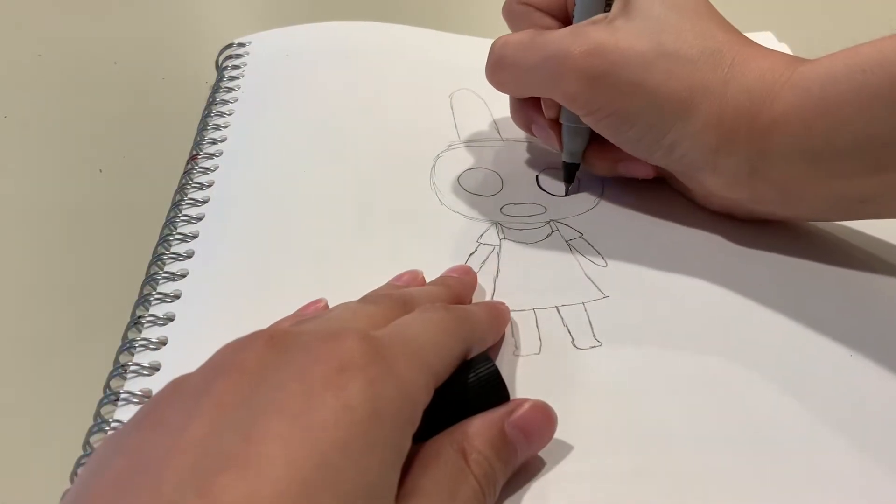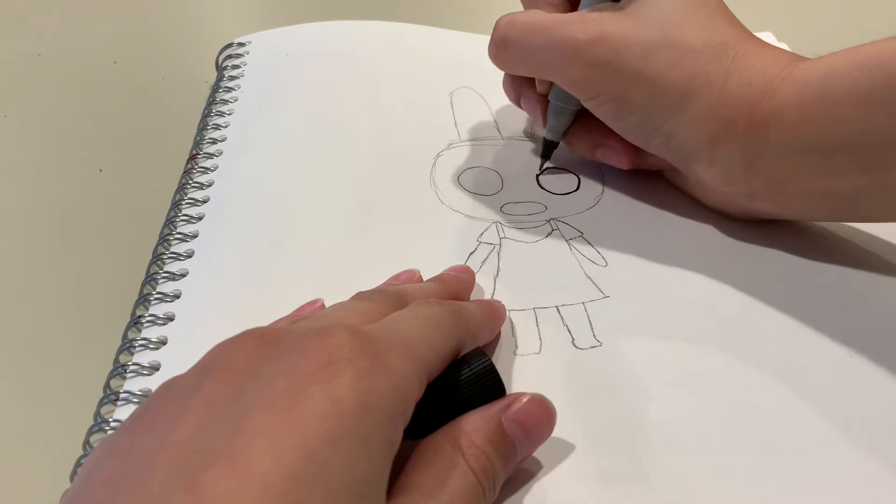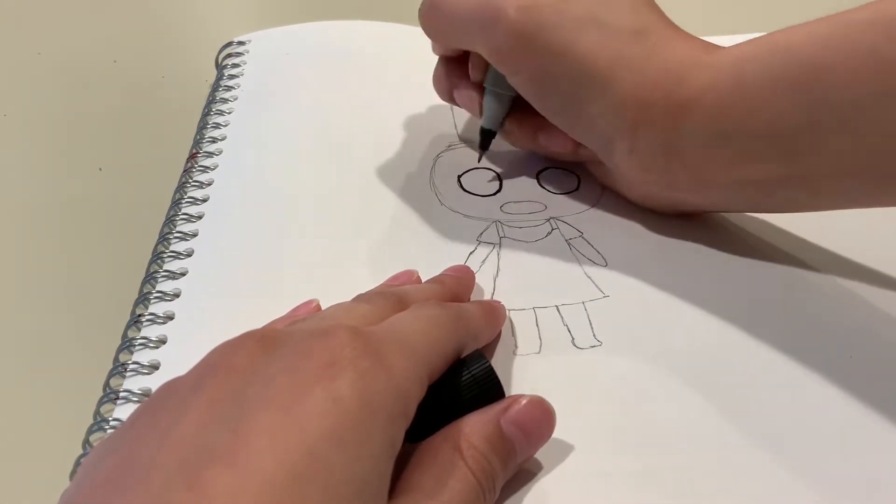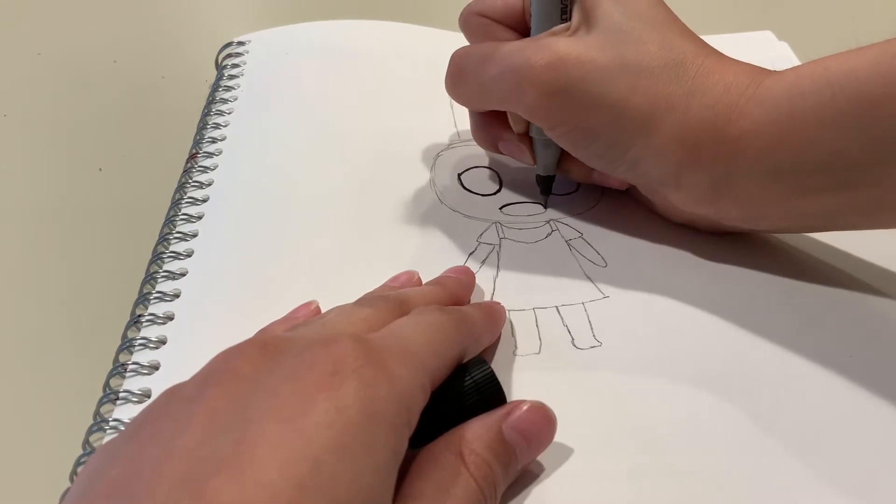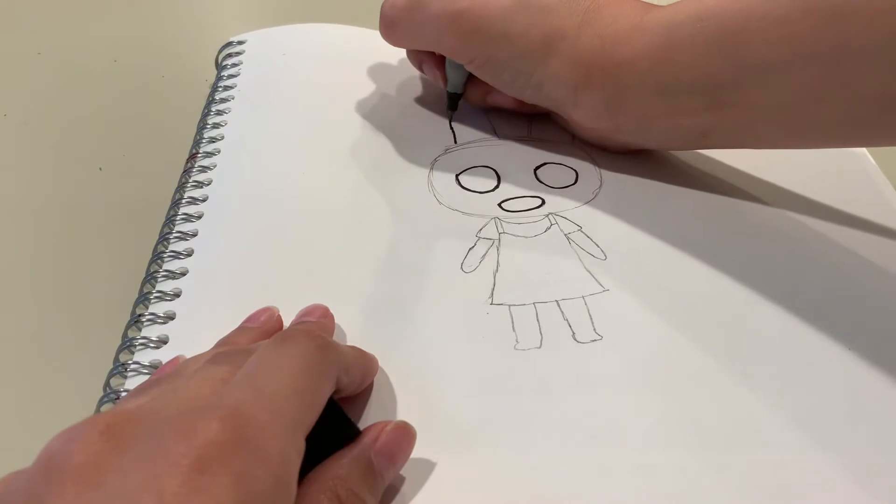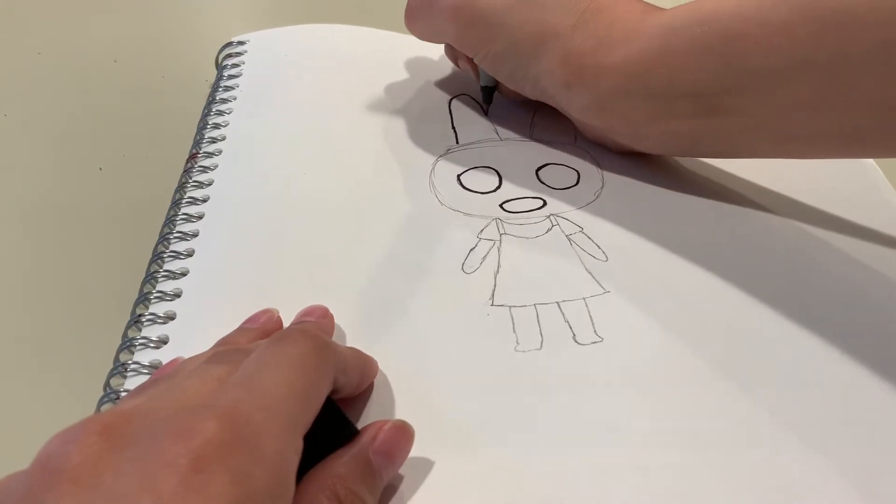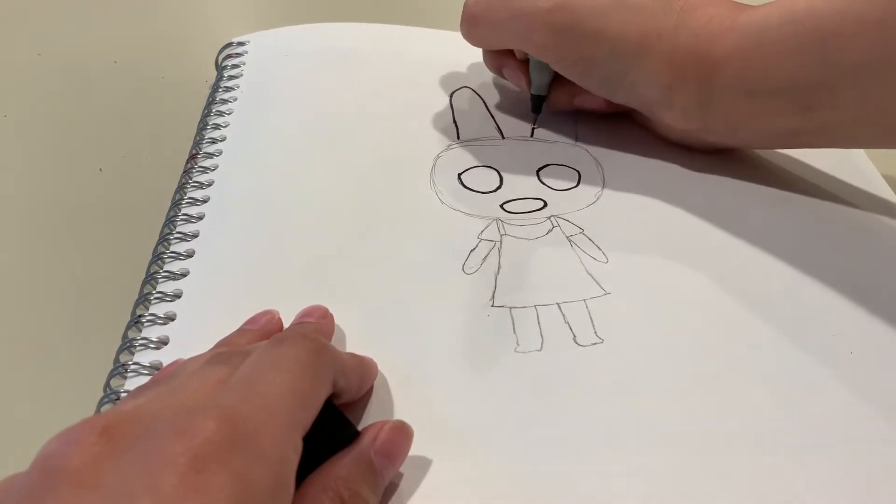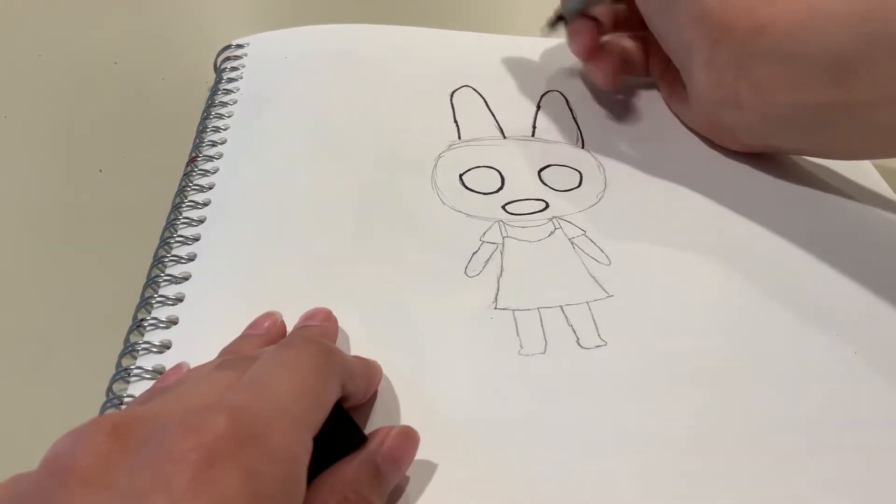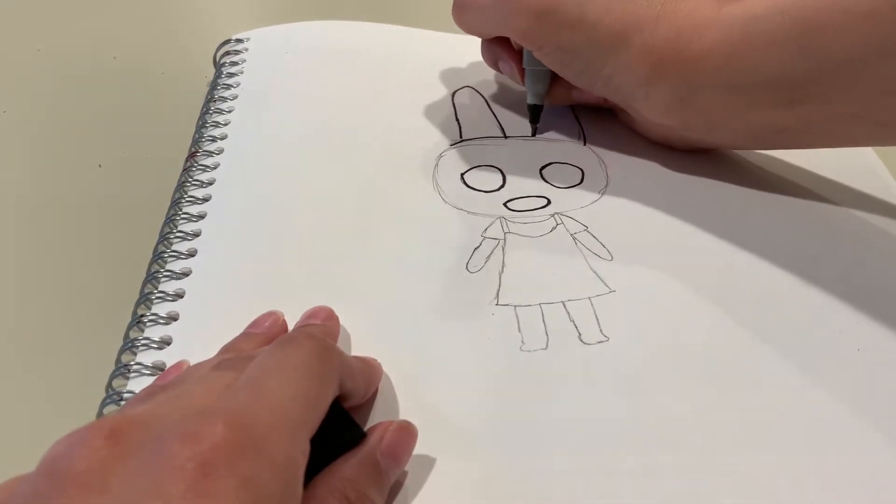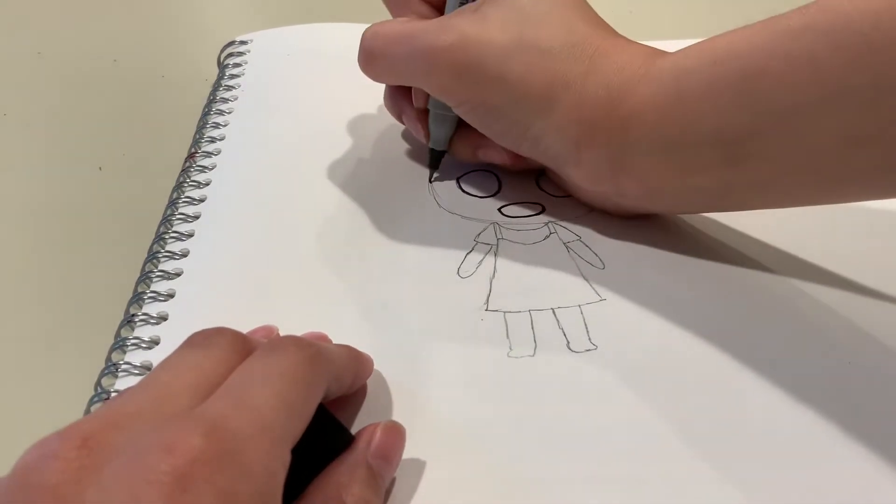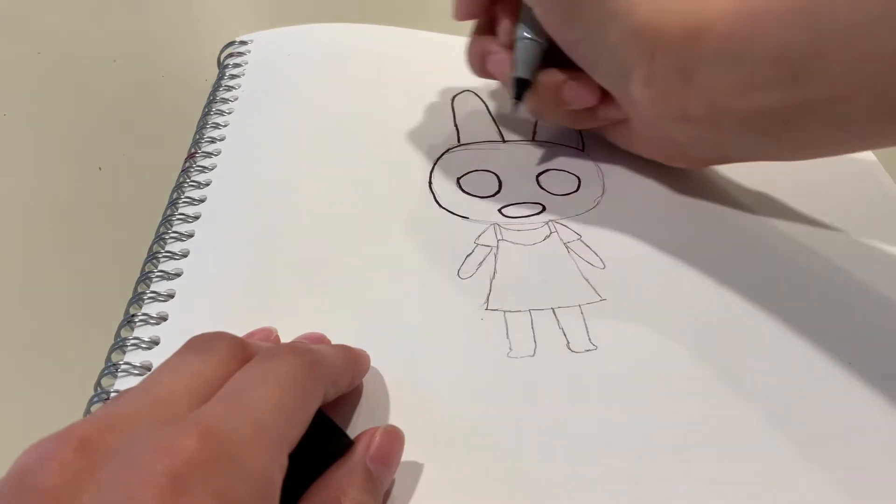Right now I'm going to use Sharpie to go over her eyes and mouth. This will make it look more professional, and it won't have such a sketchy look. Now I'm going to move on to her ears and her head. And I messed up a little bit here, but experimenting is the whole point of art, so you can try out different styles. And I think that even though I messed up, I was still pretty happy with how the drawing came out.